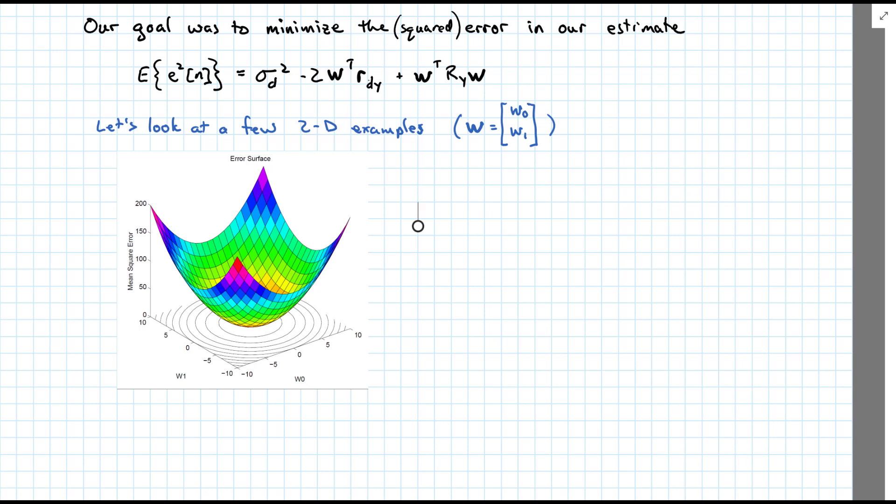This would be here, what we're plotting is our error as a function of the weight vector. And, which is also, our error is E_n squared, but E squared is going to be of course a function of our weight vector.